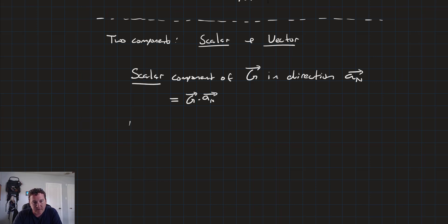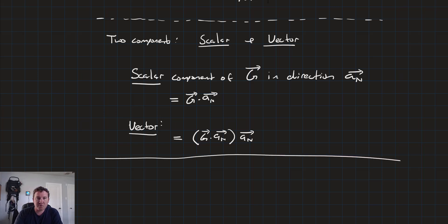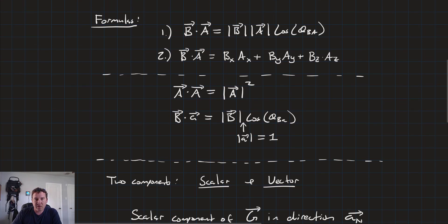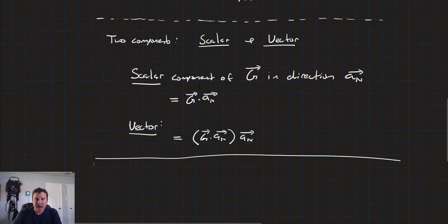That's the scalar component. The vector component tells me the direction, and it equals the dot product — which is the magnitude of that vector — times the unit vector itself. Those are the two big things the dot product gets us: a way to represent our vector in terms of other vectors, and the ability to find scalar and vector components.